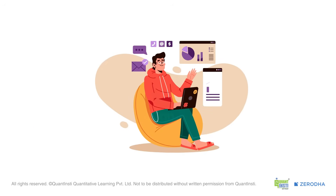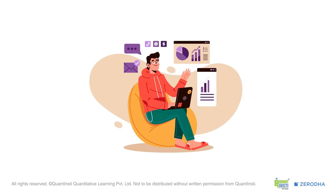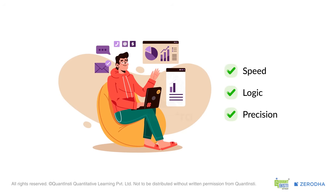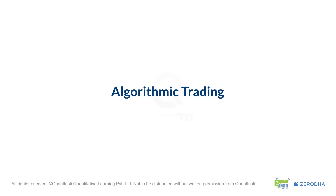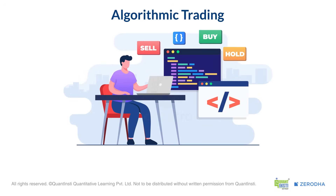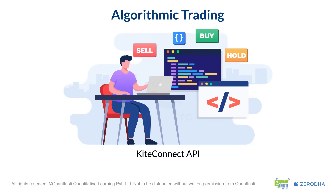What if your trading could essentially run itself? What if your strategies could execute with speed, logic and precision, even when you're not actively watching every single tick? This is where algorithmic trading comes in, and this course will guide you on how to automate your trades through Zerodha's KiteConnect API.